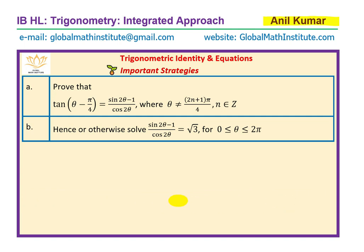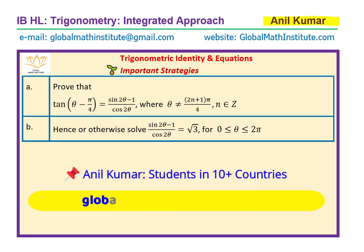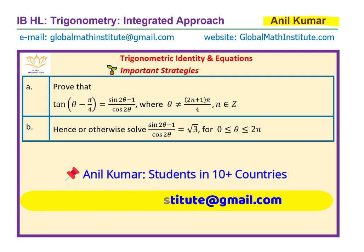It has two parts. Part A is to prove that tan(θ - π/4) equals (sin 2θ - 1) over cos 2θ, where θ is not equal to (2n + 1) times π/4, where n belongs to the set of integers. Part B is: hence or otherwise, solve the equation (sin 2θ - 1) over cos 2θ equals √3, where θ is between 0 and 2π.